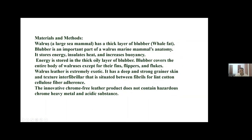Earlier, walrus had a thick layer of blubber — an important part of the walrus marine mammal's anatomy. It stores energy, insulates heat, and increases buoyancy. Energy is stored in the thick oily layer of blubber. Blubber covers the entire body of walrus except for the fins, flippers, and flukes. Walrus leather is extremely exotic, with a deep and strong grain skin and texture — interfibrillar, situated between fibrils for lint cotton cellulose fiber adherence. The innovative chrome-free leather product does not contain hazardous chrome heavy metal or acidic substances.